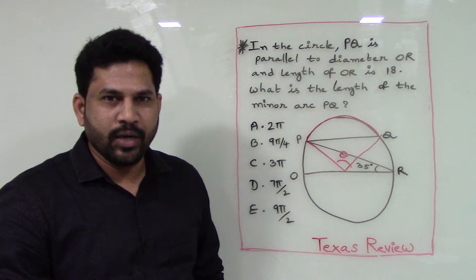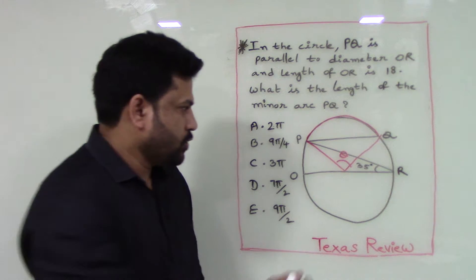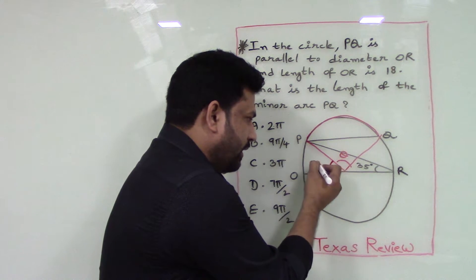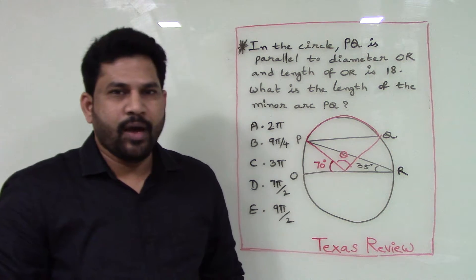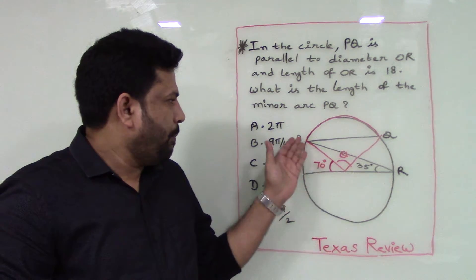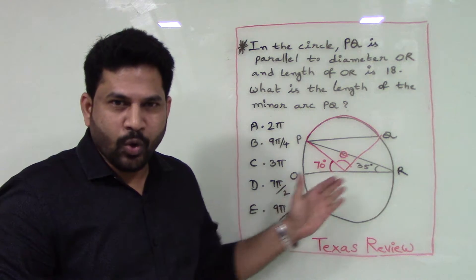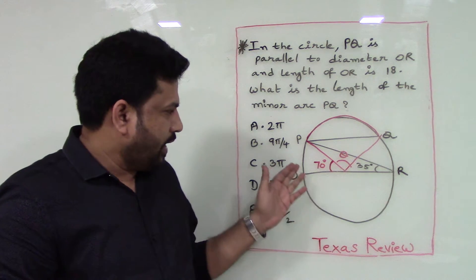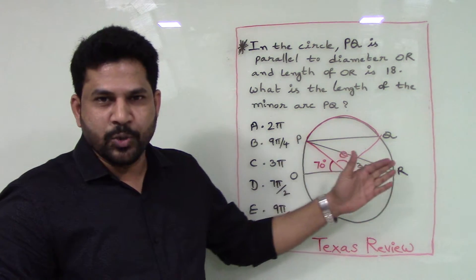So this angle must be 70 degrees. And it is given PQ is parallel to OR, so the length of the arc OP should be equal to the length of the arc QR.